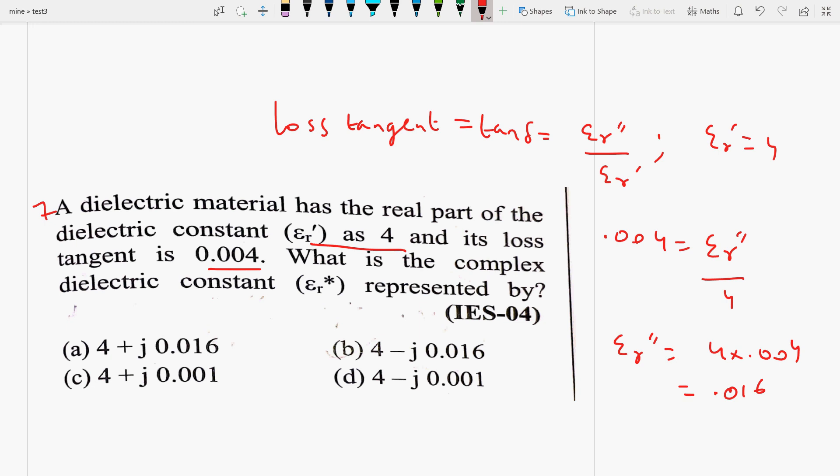Toh haam isko aise licksakte hai, 0.004 is equal to, this is your imaginary part and this is 4. Toh epsilon r double dash is equal to kitna ho jayega, 4 into 0.004 that is 0.016. Kaide se toh yeh itna hi ho na chahi 0.016. Ab humare paas joh complex part hai, this is equal to what, real part minus this imaginary part. Toh yeh value kitna ho ga, 4 minus j 0.016. Toh iska joh right answer ho ga, hoh yeh ho ga. Iska b option.